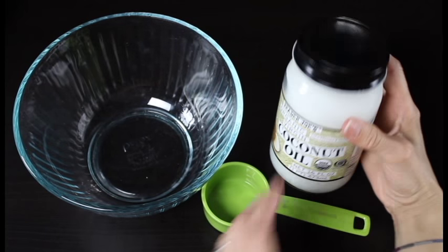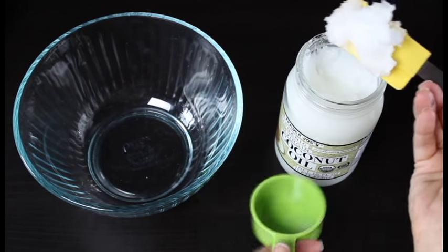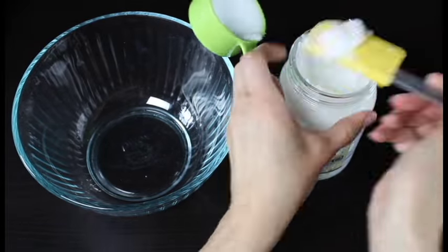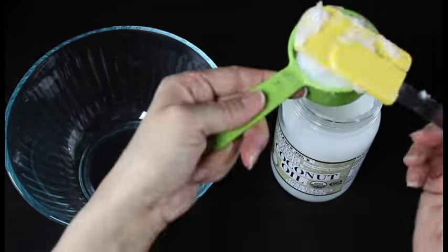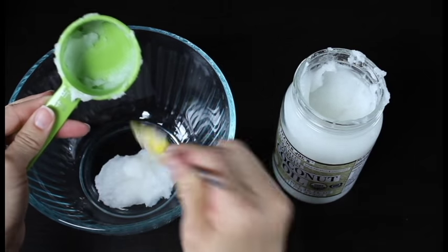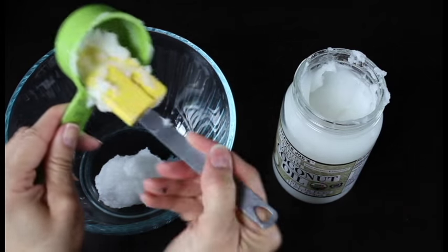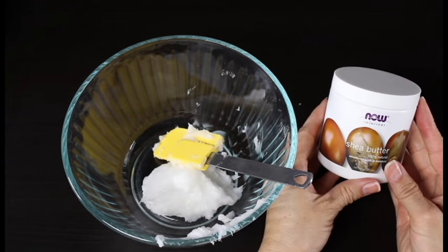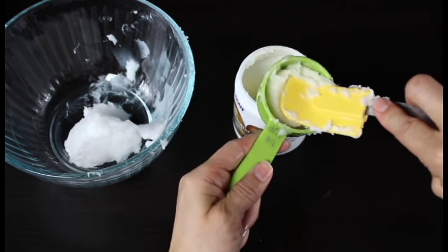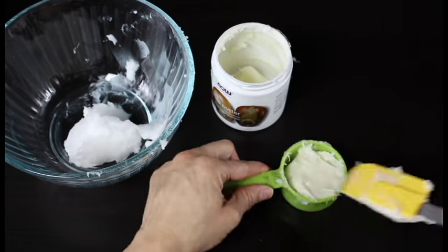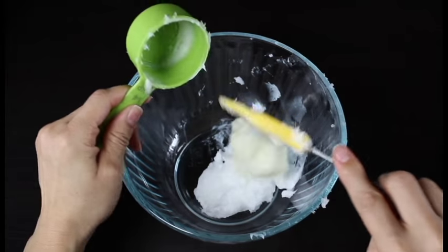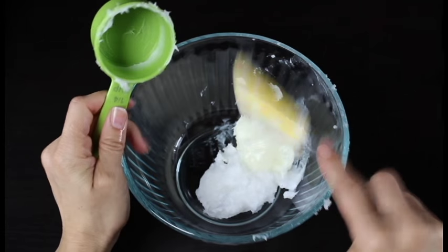The first step is to measure out our coconut oil, and we'll be measuring out one-fourth cup. Coconut is actually semi-solid at room temperature. If you have a really warm kitchen it will probably already be melted, but just go ahead and measure that into your bowl. Then you're going to grab the shea butter - shea butter is also a semi-solid butter. It's a little bit thicker than the coconut oil, but you're just going to measure one-fourth cup of that and scoop it into your bowl.